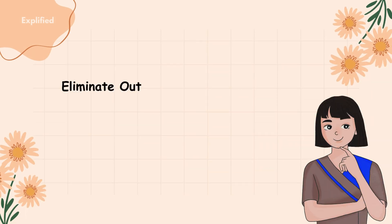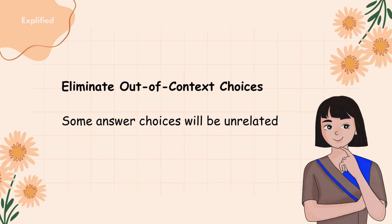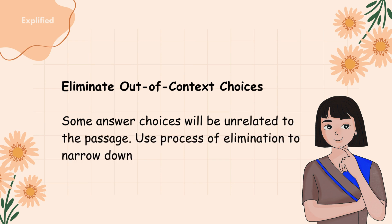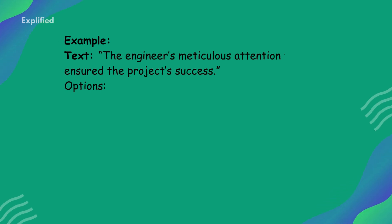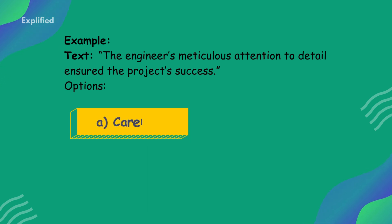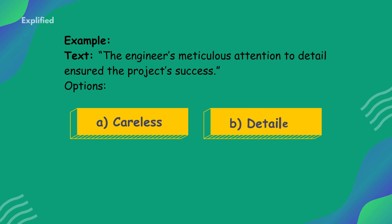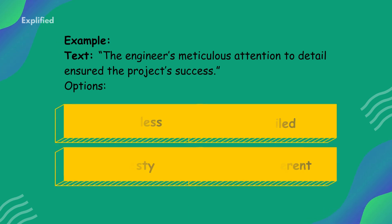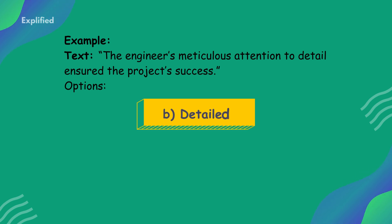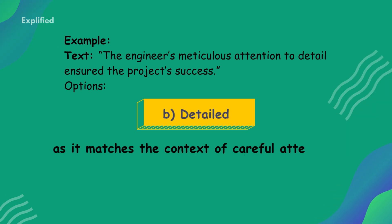Tip 3: Eliminate out-of-context choices. Some answer choices will be unrelated to the passage, so use process of elimination to narrow down your options. Example — text: 'The engineer's meticulous attention to detail ensured the project's success.' Options: A. Careless. B. Detailed. C. Hasty. D. Indifferent. Answer: B — Detailed, as it matches the context of careful attention.